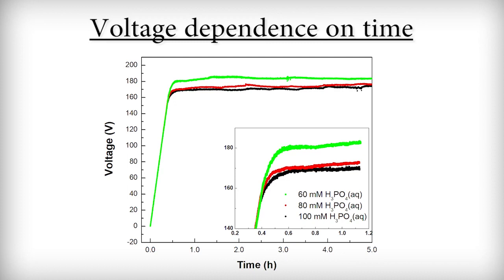It can be seen that the voltage to achieve a current of 50 milliamperes in an electrolyte with a concentration of 100 millimoles is approximately 165 volts, while for an electrolyte with a concentration of 80 millimoles it's approximately 170 volts, and for an electrolyte with a concentration of 60 millimoles approximately 180 volts. In all syntheses, a slight increase in voltage is in line with expectations because the thickness of the oxide layer increases and thus the electrical resistance of the resulting layer.